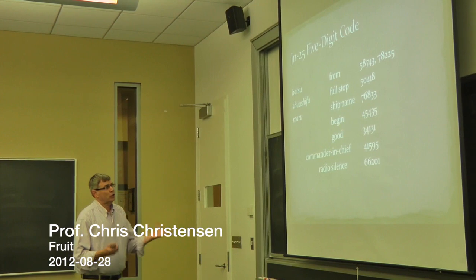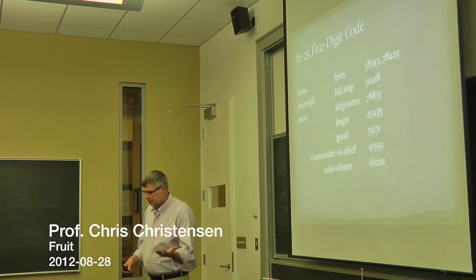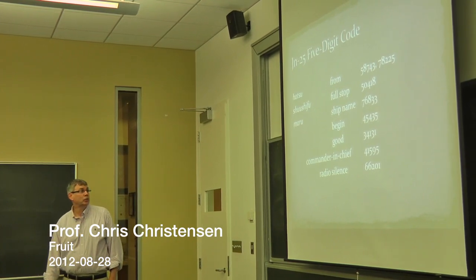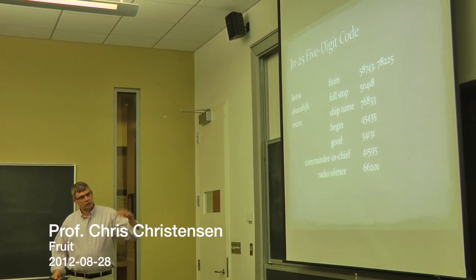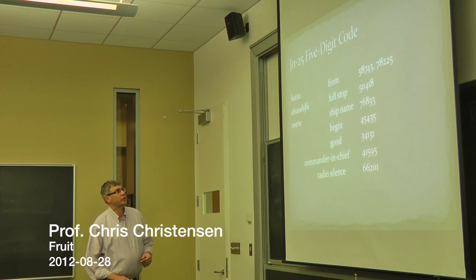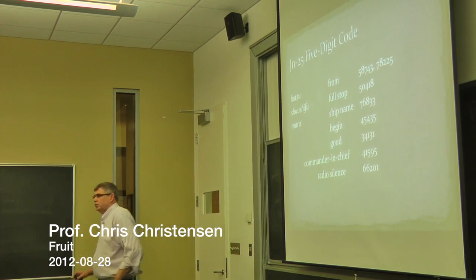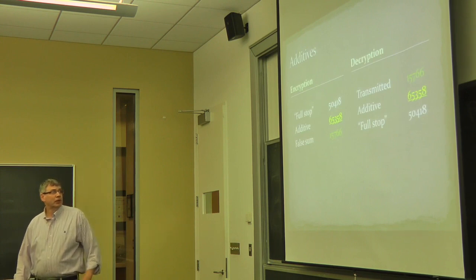Now, codes are typically broken not by mathematicians, they're broken by linguists. People who understand how words and phrases fit together in languages. But to give additional security to this cipher, what the Japanese did is they overlaid it with a system of random numbers.